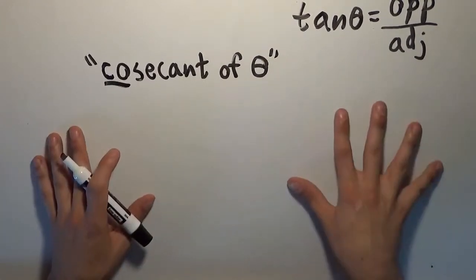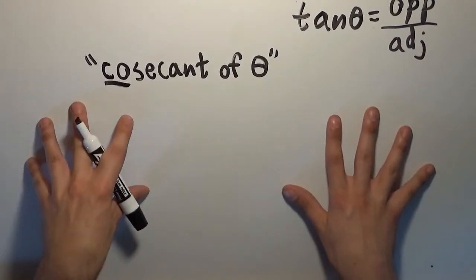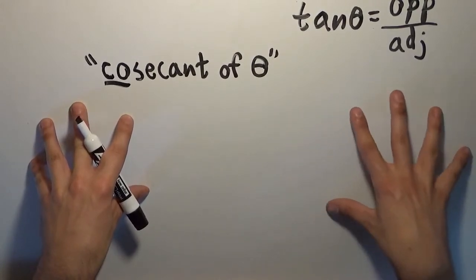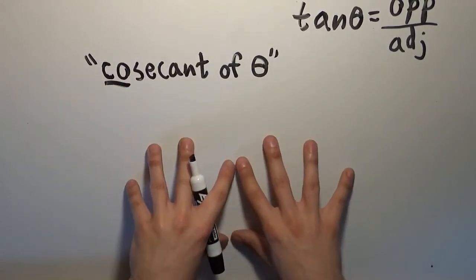That's what all pairs of functions and co-functions do. If you apply one to an angle and apply the other to the complementary angle, you get the same number. That's what they do.